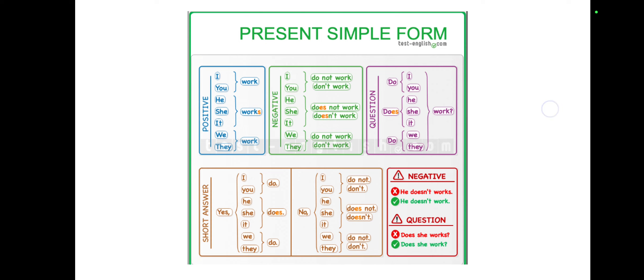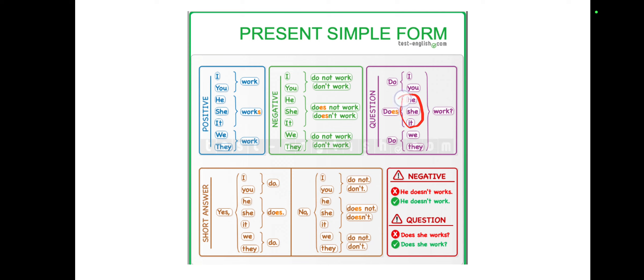Next is the question form. For present simple, whenever you see I, you, we, or they, we use 'do' in front — like 'Do you know?' or 'Do you work?' When you see he, she, or it, which are singular, we use 'does' to ask questions — like 'Does he work?' 'Does she eat?' 'Does it work?' So whenever it's singular we use 'does'; if it's plural we use 'do.'